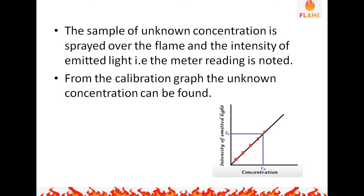From the calibration curve, the unknown concentration can be determined. We get a straight line curve between the concentration and the intensity of the emitted light, and using this calibration curve we calculate the concentration of the unknown. The calibration curve method and its calculation have been discussed in a previous video available via the info button.